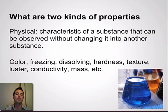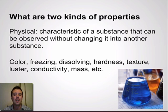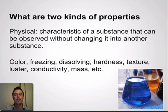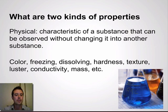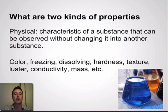There are two kinds of properties we need to talk about. First, physical properties — any characteristic of a substance that can be observed without changing it into another substance. For example, this liquid in the picture here is blue. That is a physical property. Color, freezing point, ability to dissolve, hardness, texture, luster — which means shininess — conductivity, mass, and many other descriptions are all called physical properties.